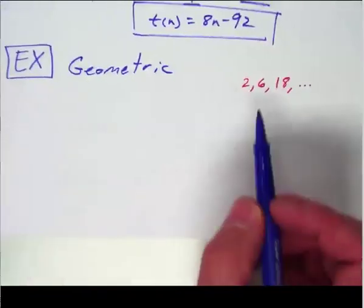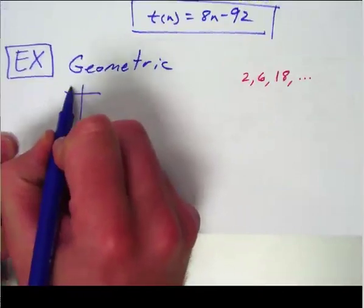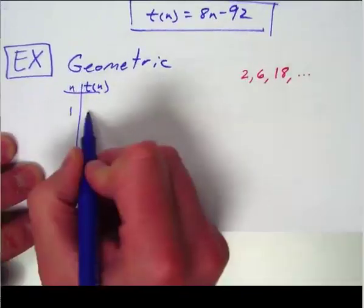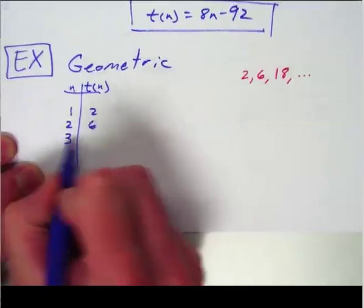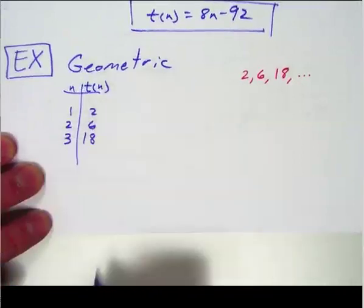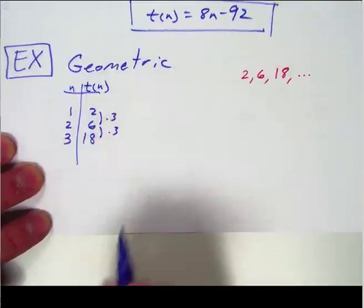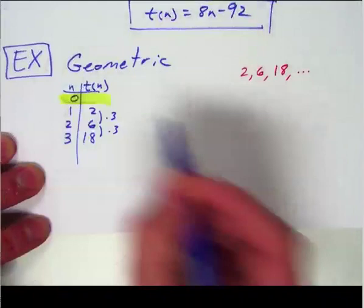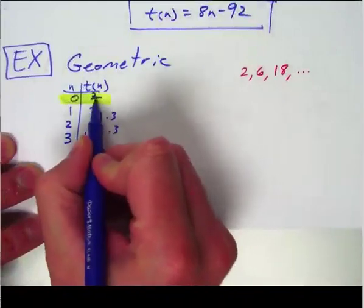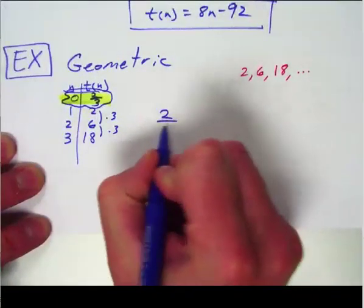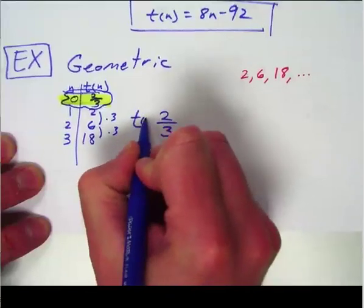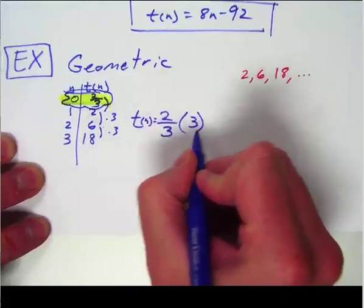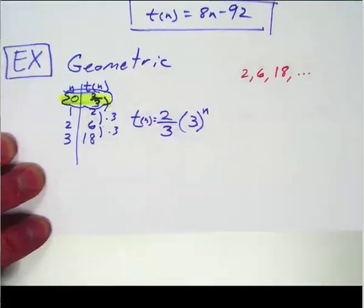Now let's jump to geometric sequences. The only difference is that geometrics are exponential — repeated multiplication. If this is the first term of the sequence, the second term is 6, and the third is 18 — you can clearly see that's times 3. You need what it starts at and what it goes by. The 0 term would be dividing by 3 going backwards, which gives 2/3. So t(n) = (2/3) · 3ⁿ, because repeated multiplication is exponential.